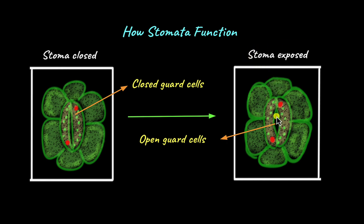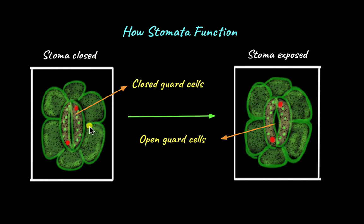Now the stoma is exposed and gas exchange can take place. When the plant decides it wants to conserve water, whatever ions and water are inside the guard cells leave, causing the guard cells to shrink again and the stomata to close. By this process — the swelling up and shrinking of guard cells — the stomatal opening is opened and closed depending on the plant's needs.